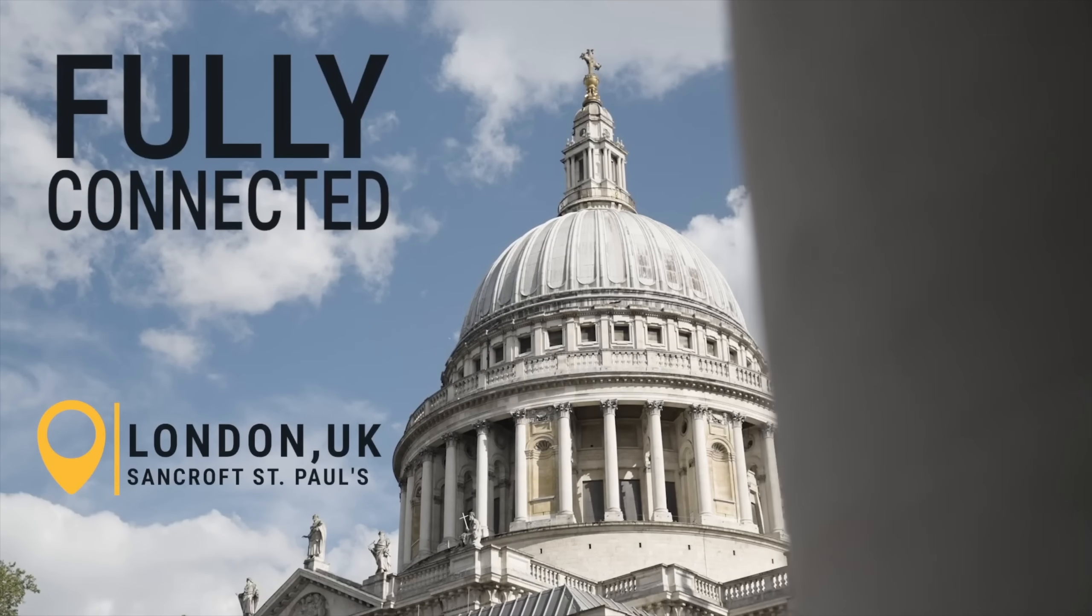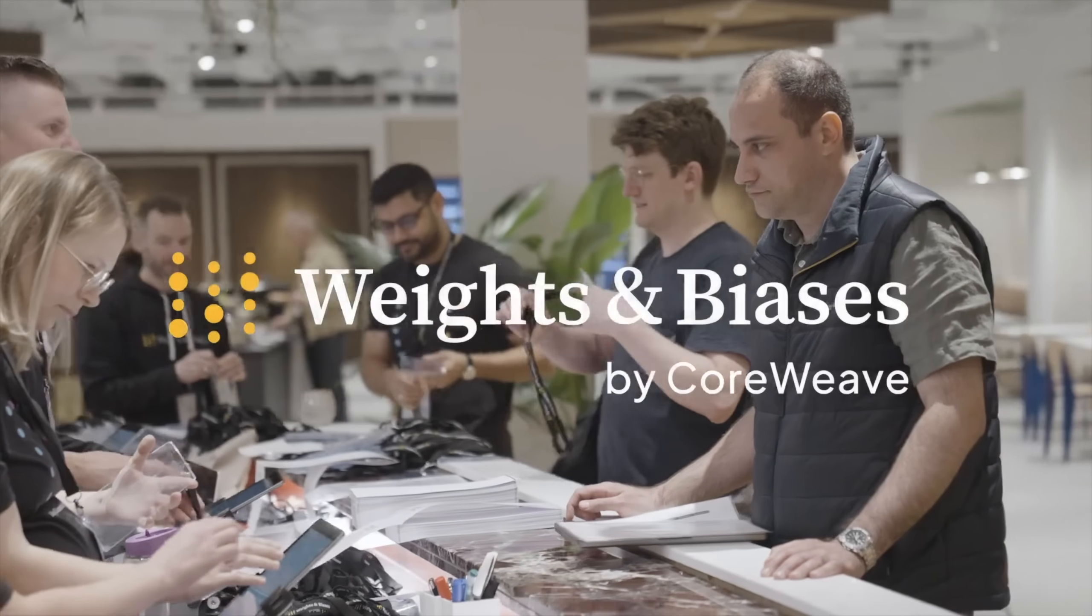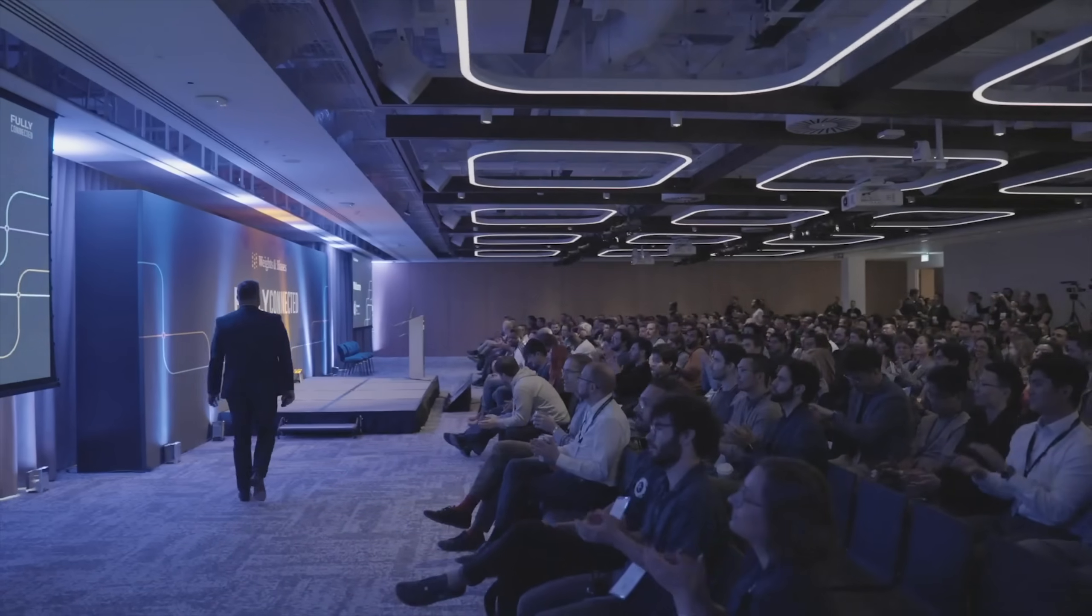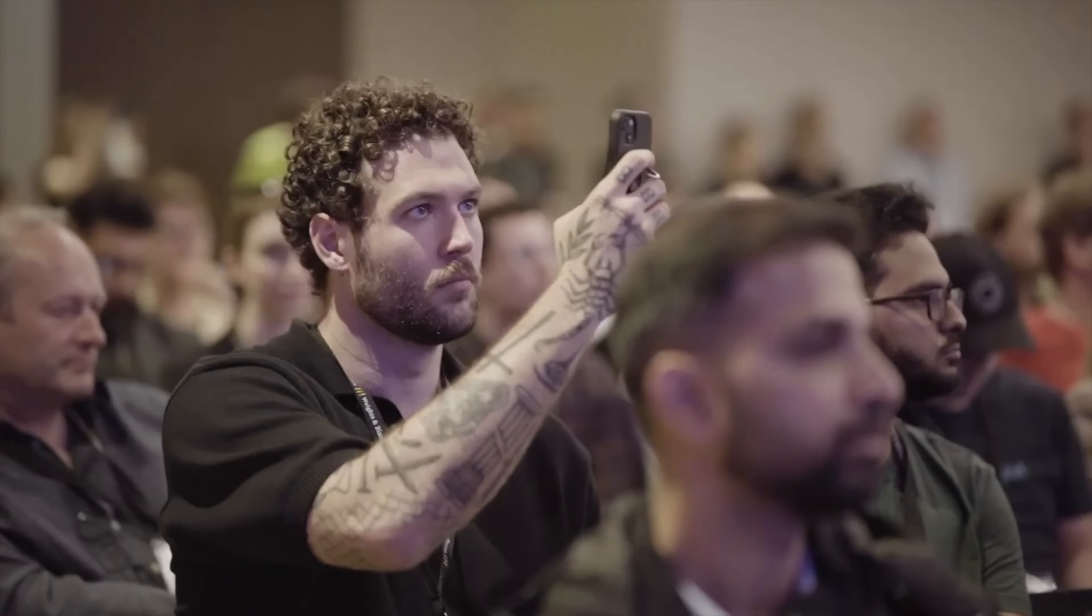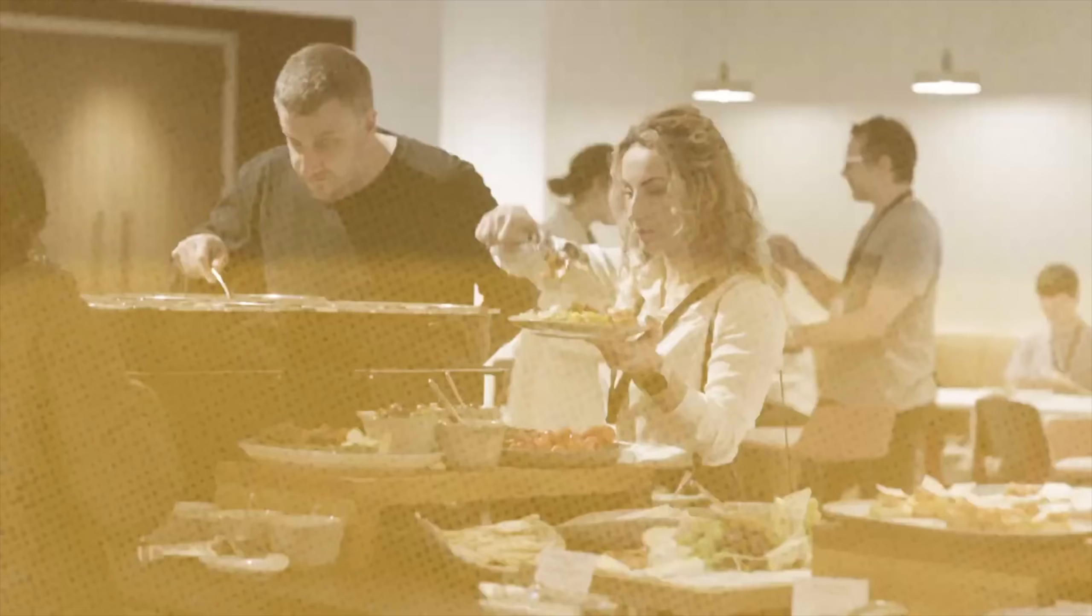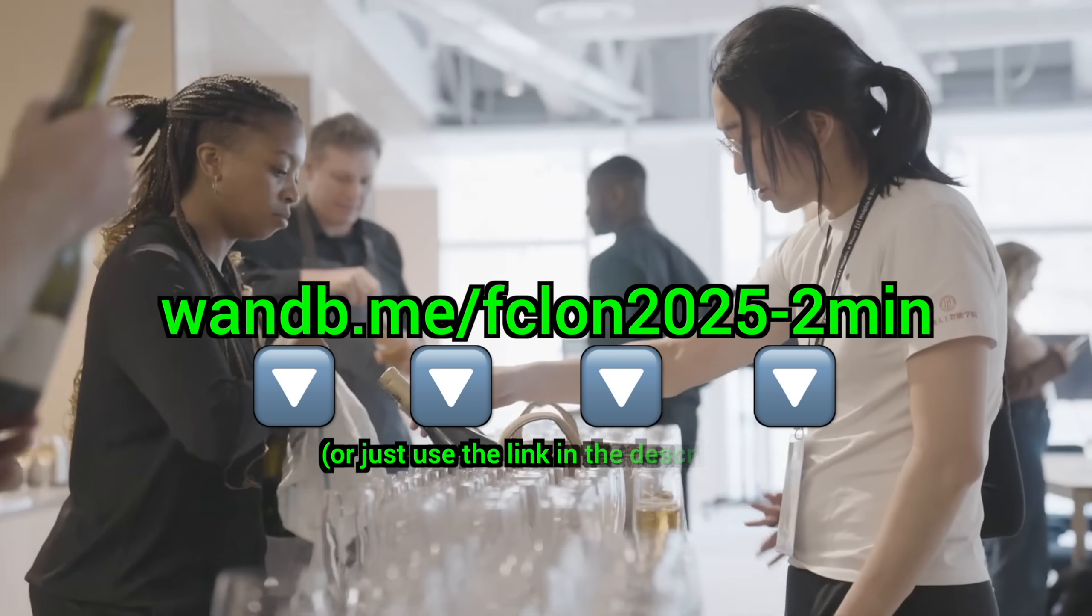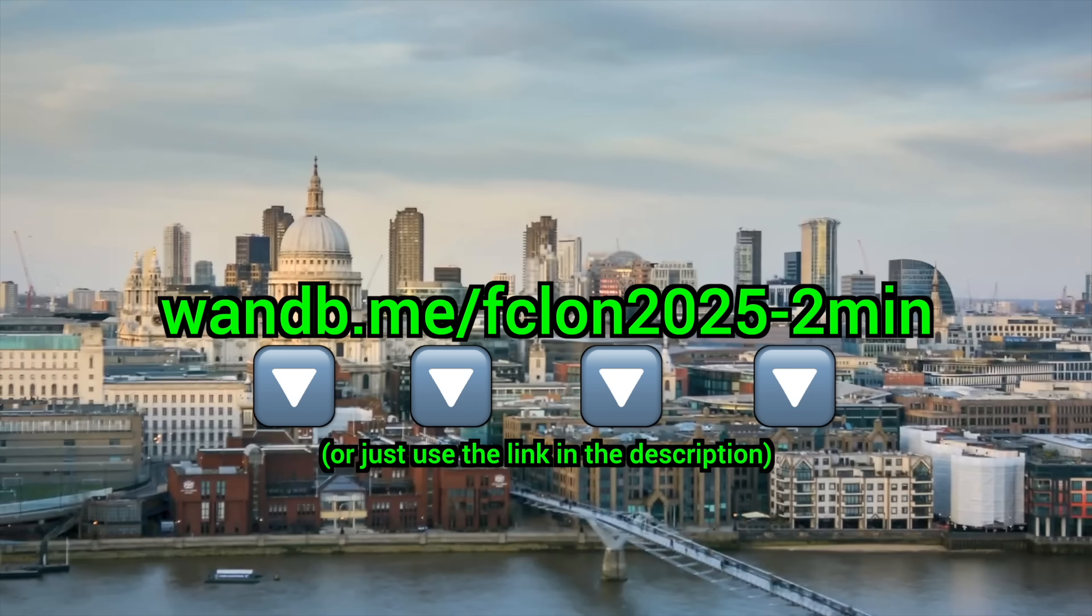On November 4th and 5th in London, the Weights and Biases Fully Connected Conference returns. Yes! Join top AI engineers for two days of agent building and model training. It's a fantastic opportunity for networking and learning. Perfect for AI developers, researchers, and business leaders. Yes, that is you fellow scholars! And here's the best part! You can get tickets at 20% off! Just click the link in the video description and use the code to claim your discount today!